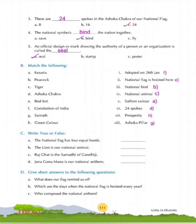Question C: True or False. A — The national flag has four equal bands: False. The national flag of India has three equal bands. B — The lion is our national animal: False. The tiger is our national animal. C — Raj Ghat is the samadhi of Gandhiji: True. D — Jana Gana Mana is our national anthem: True. It was written by Rabindranath Tagore.